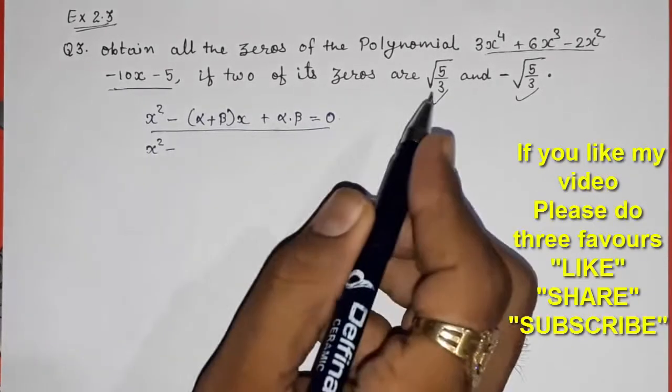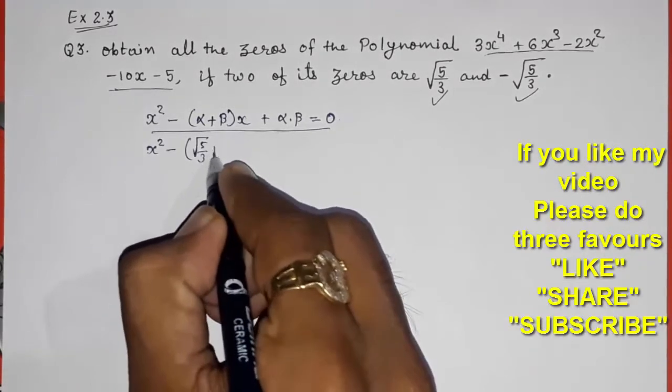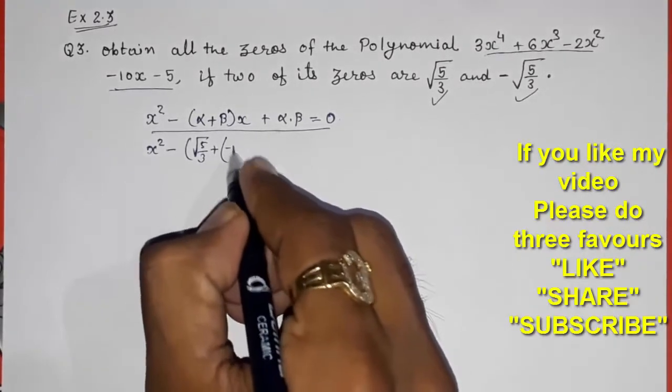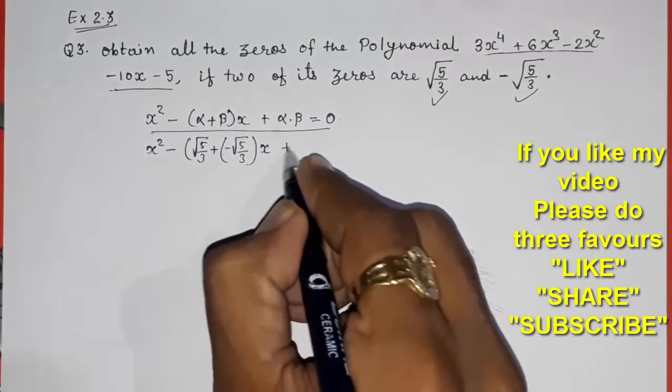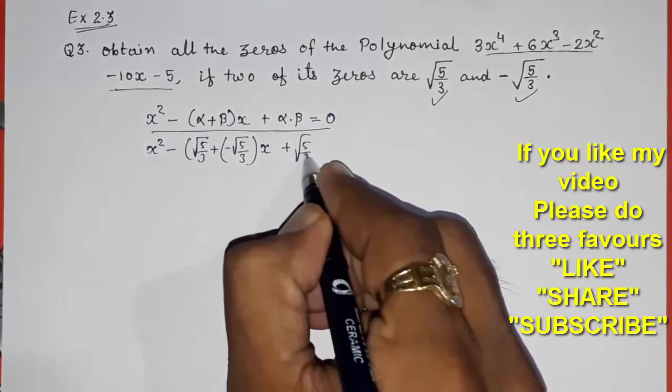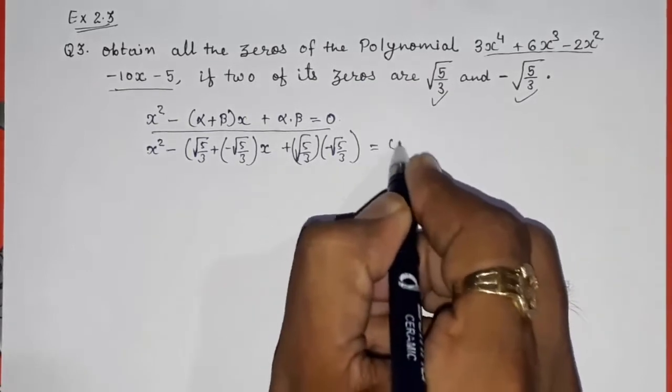Now I will put these zeros inside this. Root 5 by 3 is alpha and beta will be minus root 5 by 3 into x plus root 5 by 3 multiply with minus root 5 by 3 is equal to 0.